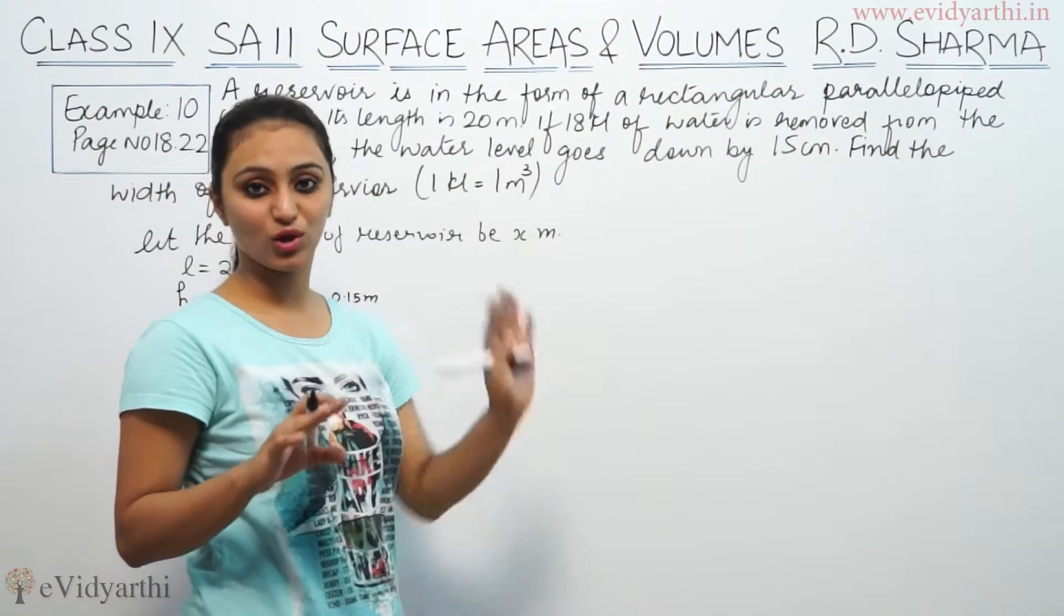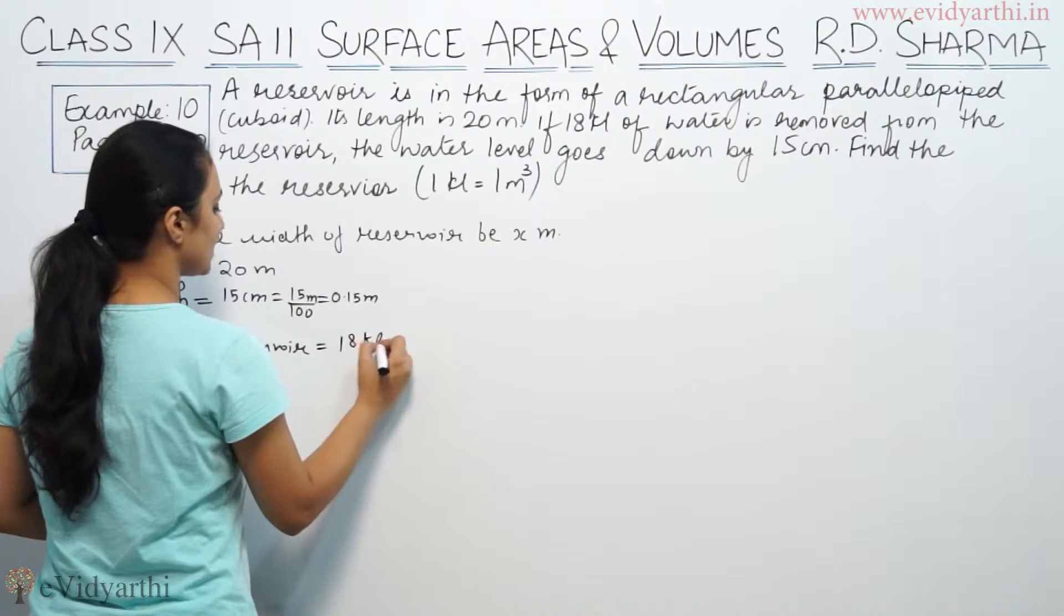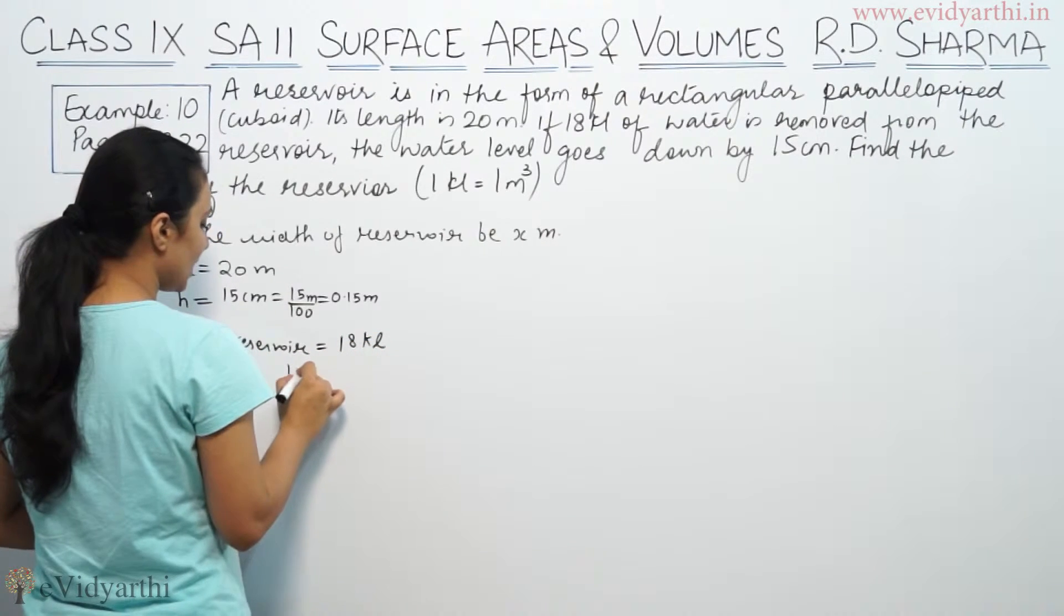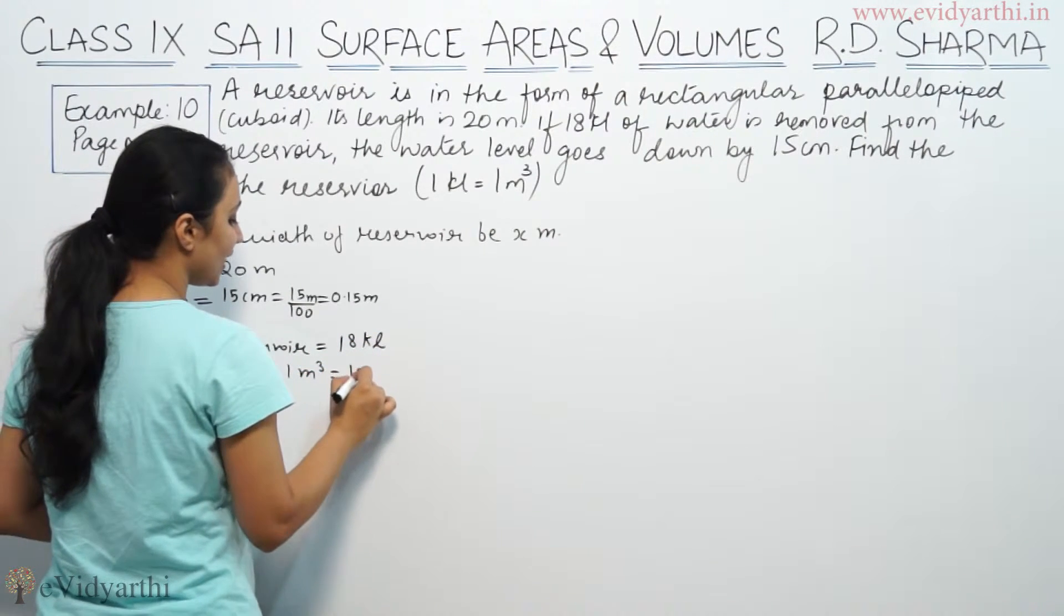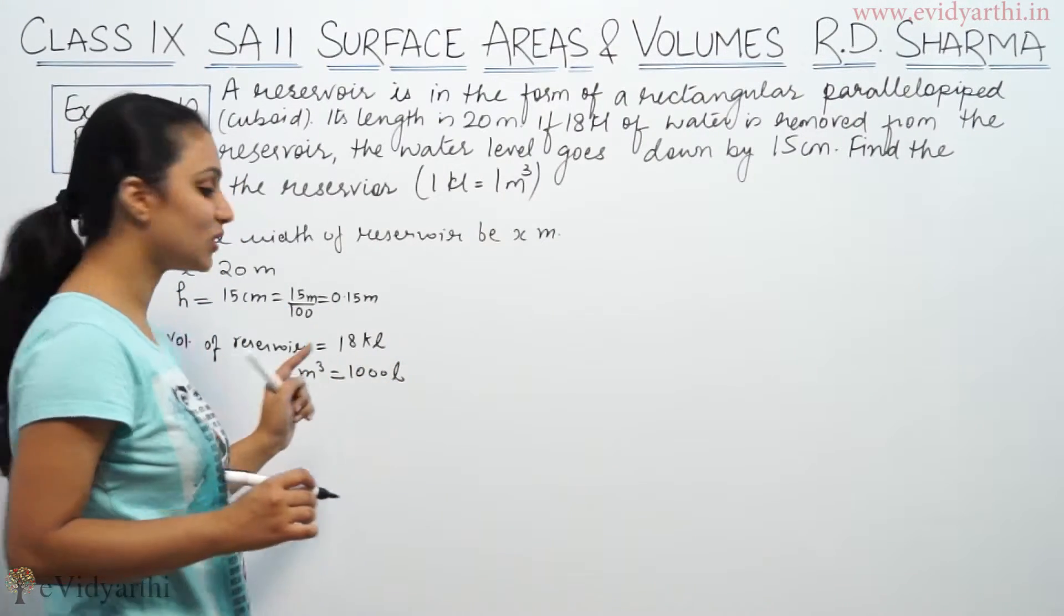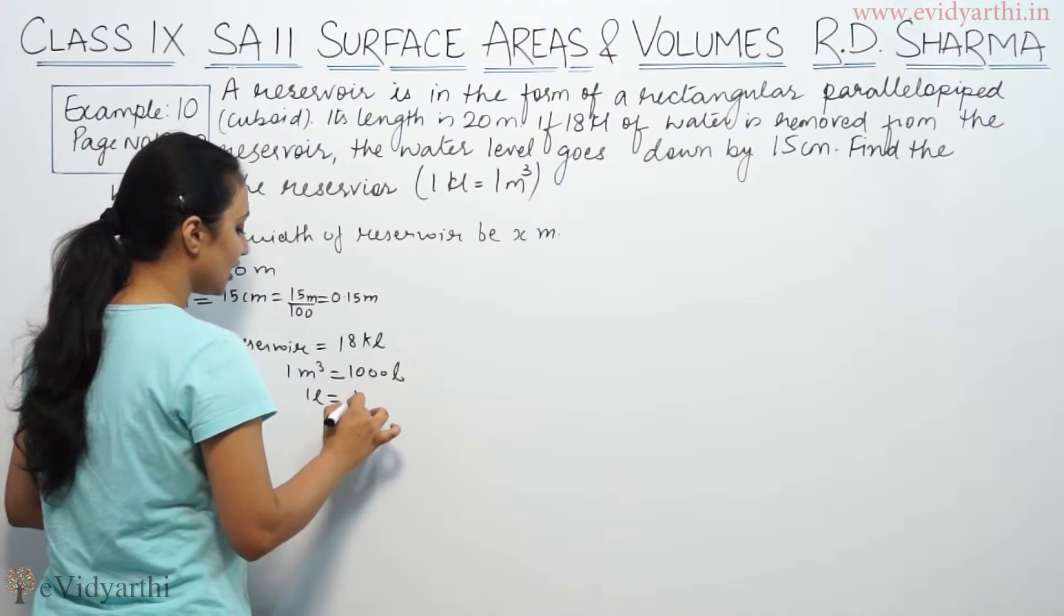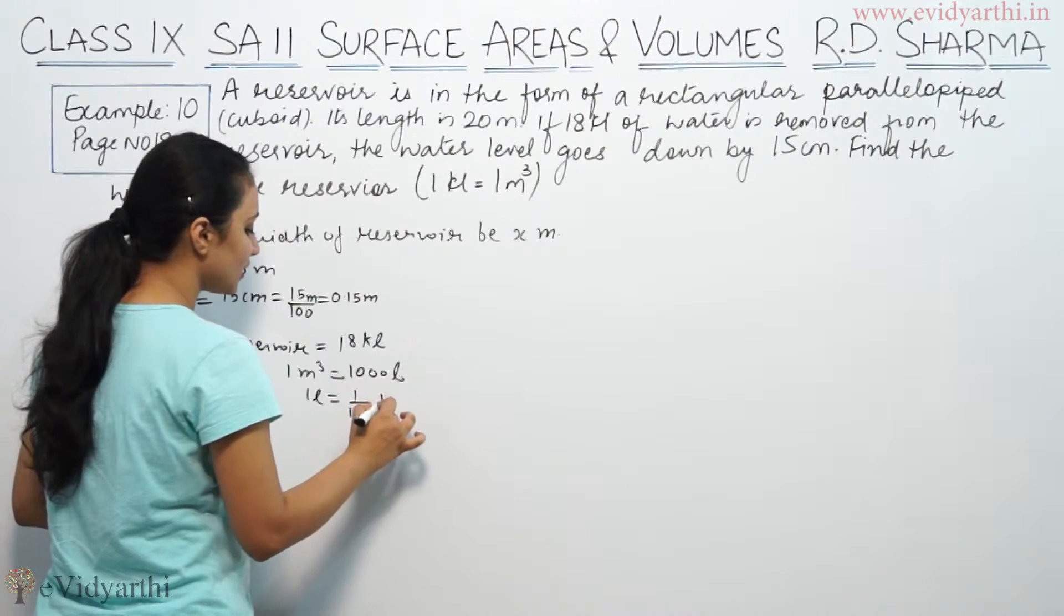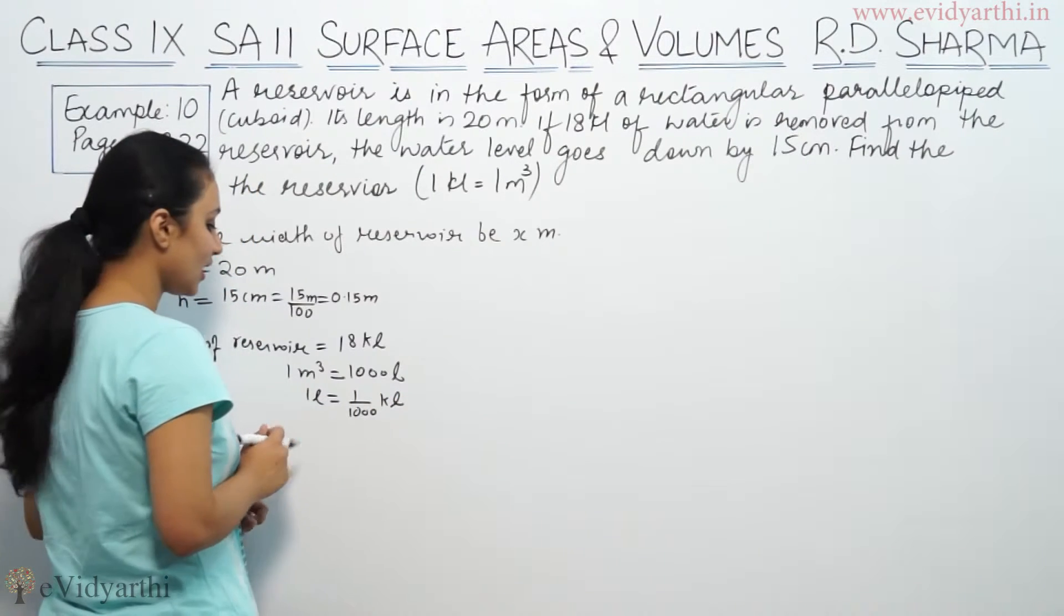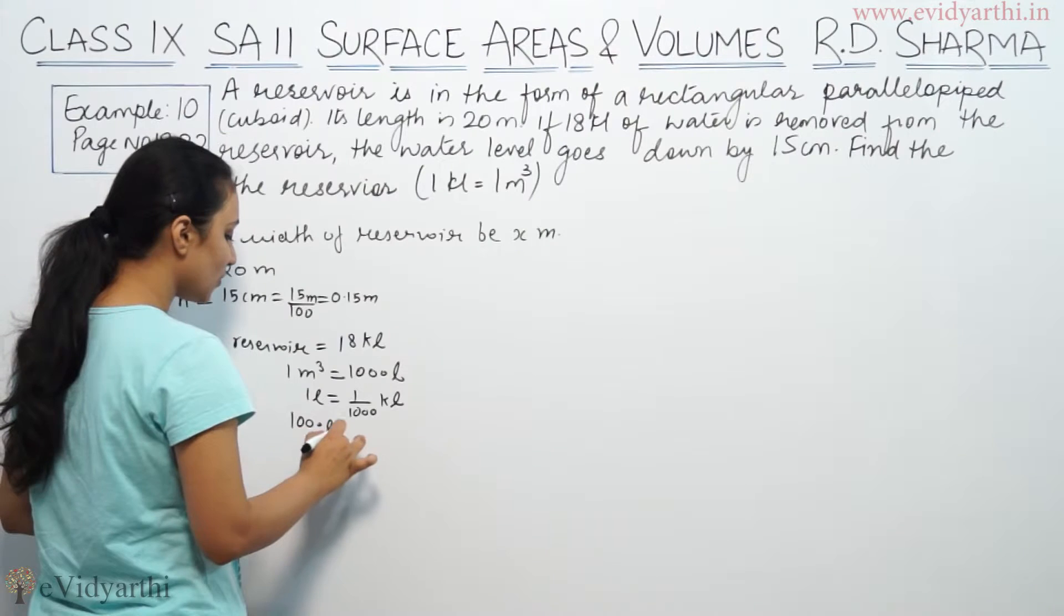Now, we know that 1 meter cube equals 1000 liters. So 1 meter cube equals 1000 liters. So 1 kiloliter equals 1 meter cube.